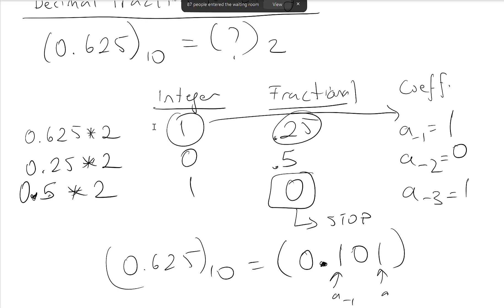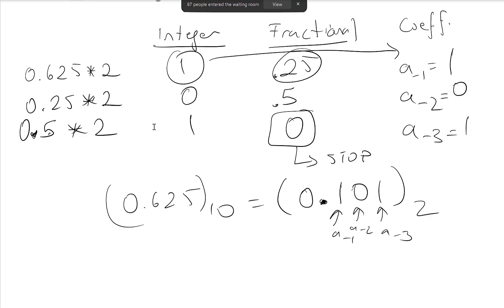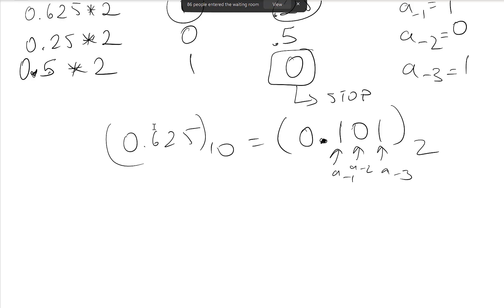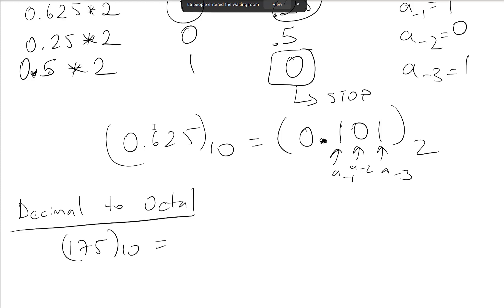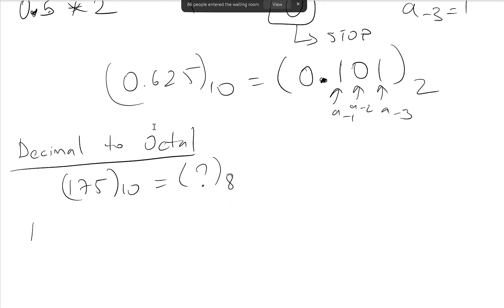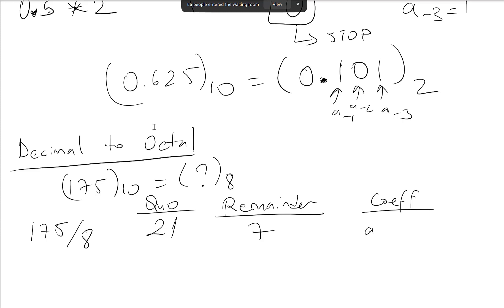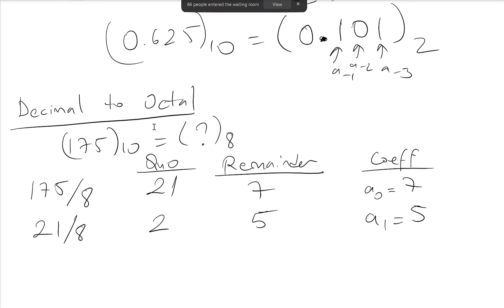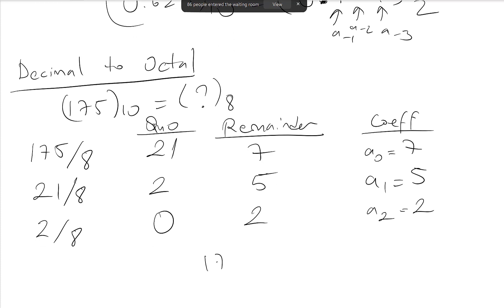Now let's do decimal to octal conversion using the same method. Given 175 in base 10: divide by 8, quotient 21, remainder 7, so a0 = 7. Divide 21 by 8: quotient 2, remainder 5, so a1 = 5. Divide 2 by 8: quotient 0, remainder 2, so a2 = 2. Therefore 175 in base 10 equals 257 in base 8.